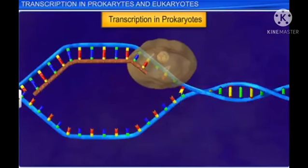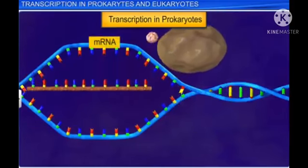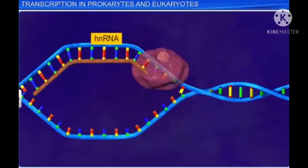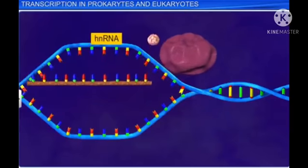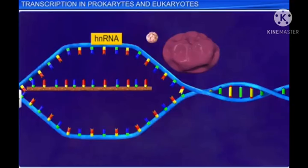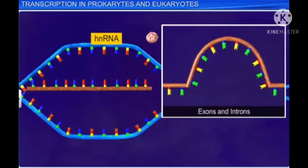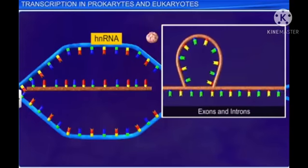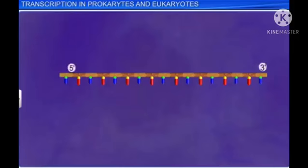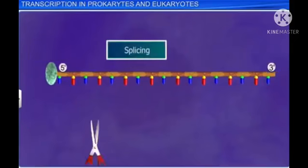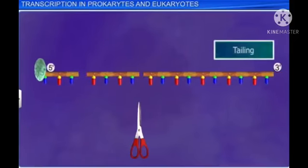The mRNA in prokaryotes does not require any processing. However, in eukaryotes, the HnRNA is inactive, since it has a split gene arrangement with exons and introns, and hence it has to undergo processes such as capping, splicing, and tailing.